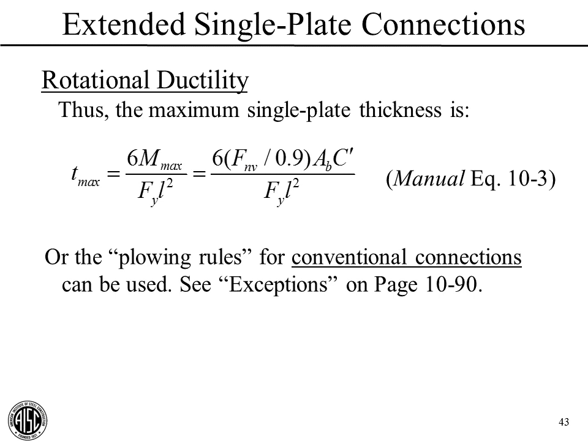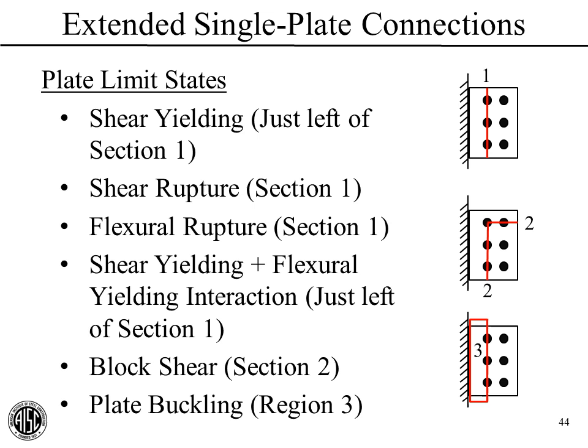The plate limit states for extended single-plate connections are: shear yielding on the gross section just to the left of the bolt holes; shear rupture along Section 1; flexural rupture along Section 1—similar to the check for angles; an interaction of shear yielding and flexural yielding just to the left of Section 1, which is new to us; block shear at Section 2; and plate buckling in the region between the support face and the bolt line, also new.